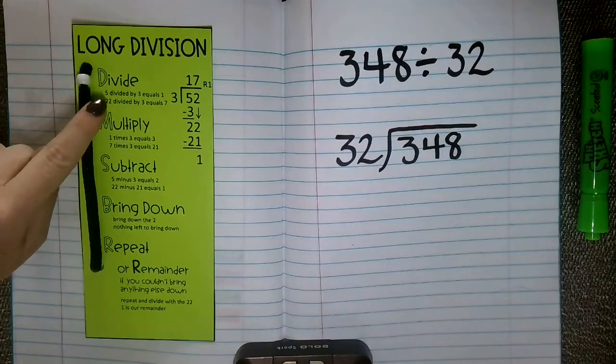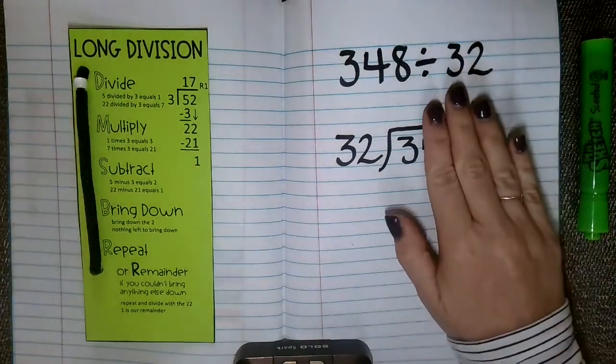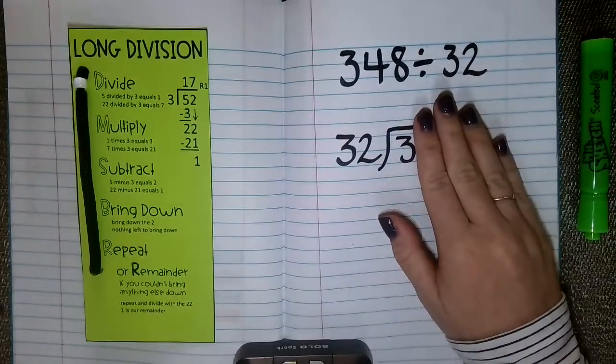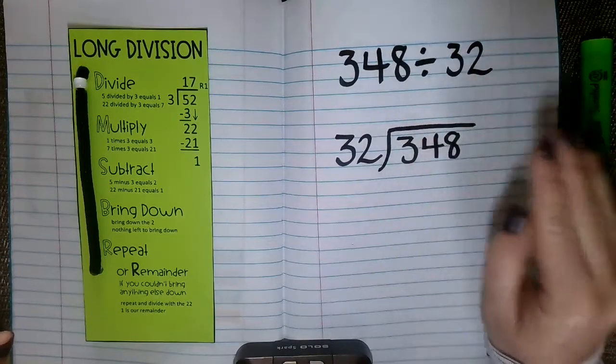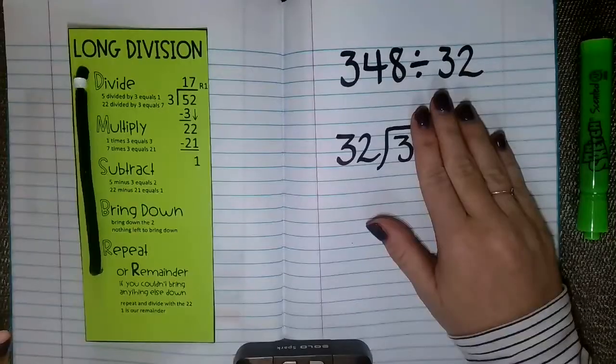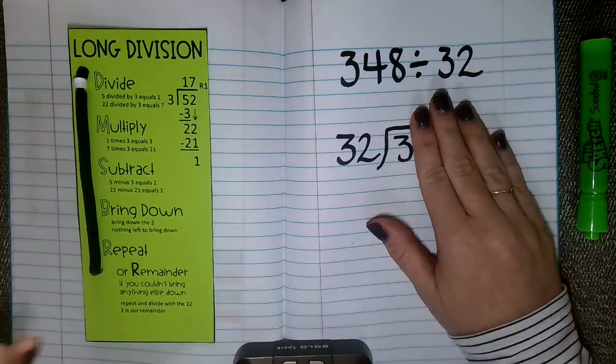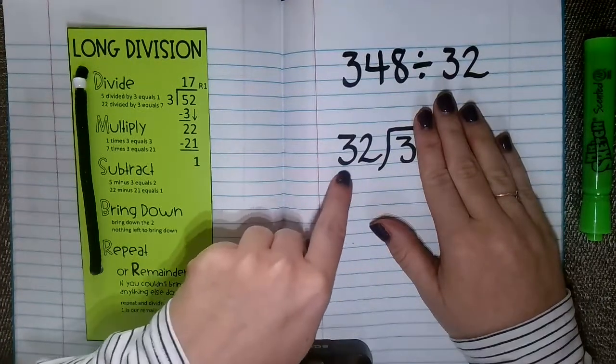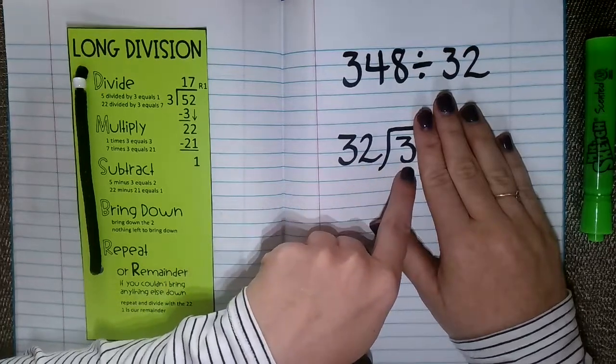So the very first step in our long division process is that we're going to divide. Now when we start to divide, I always like to cover up all the numbers except for the one in the largest place value or the one that is farthest to the left. So I'm covering up all my other numbers except that 3, because that is my largest number, my biggest place value. So I'm going to ask myself, and I'm going to keep this together, I'm going to keep this as 32. Can 32 go into the number 3?